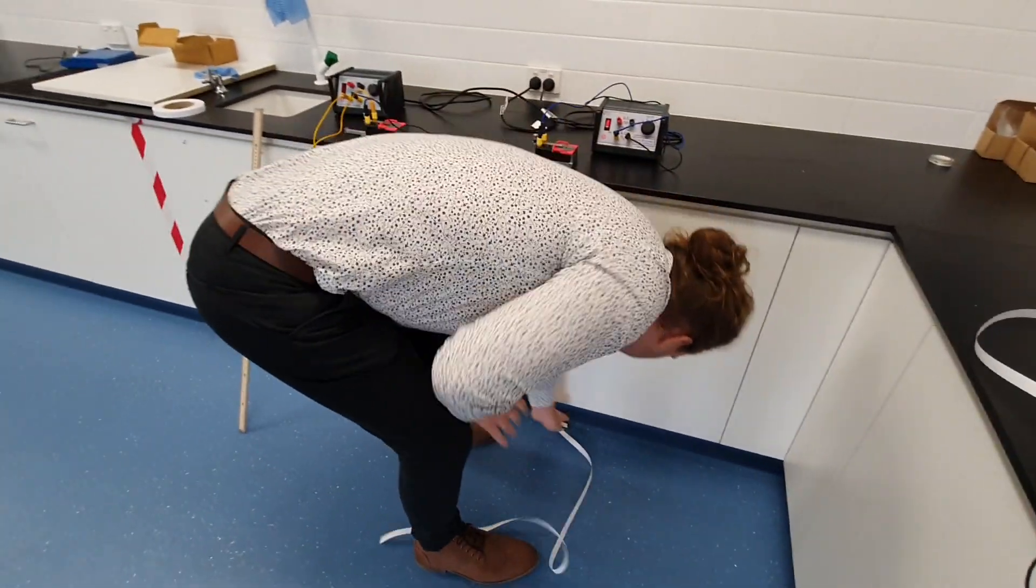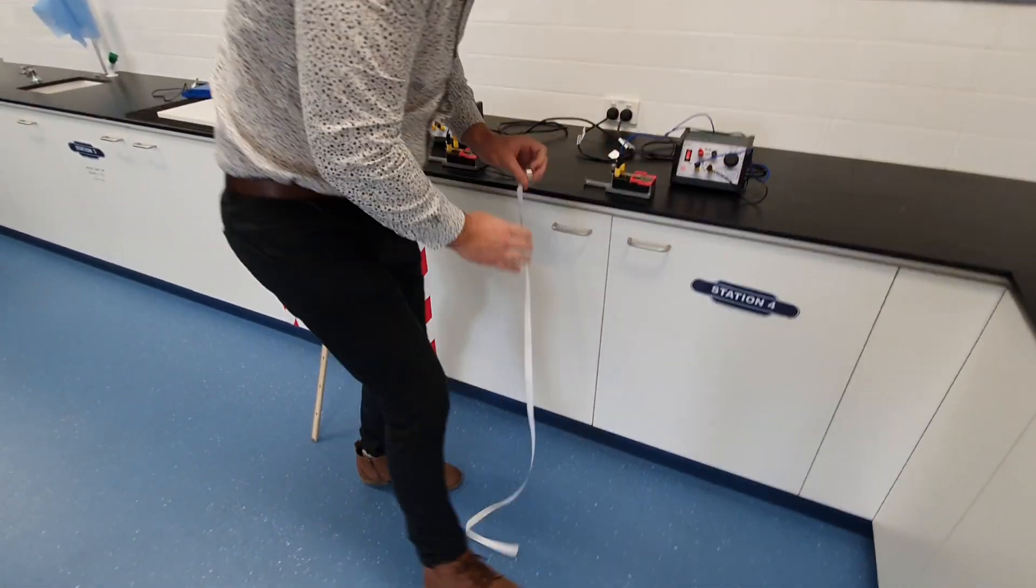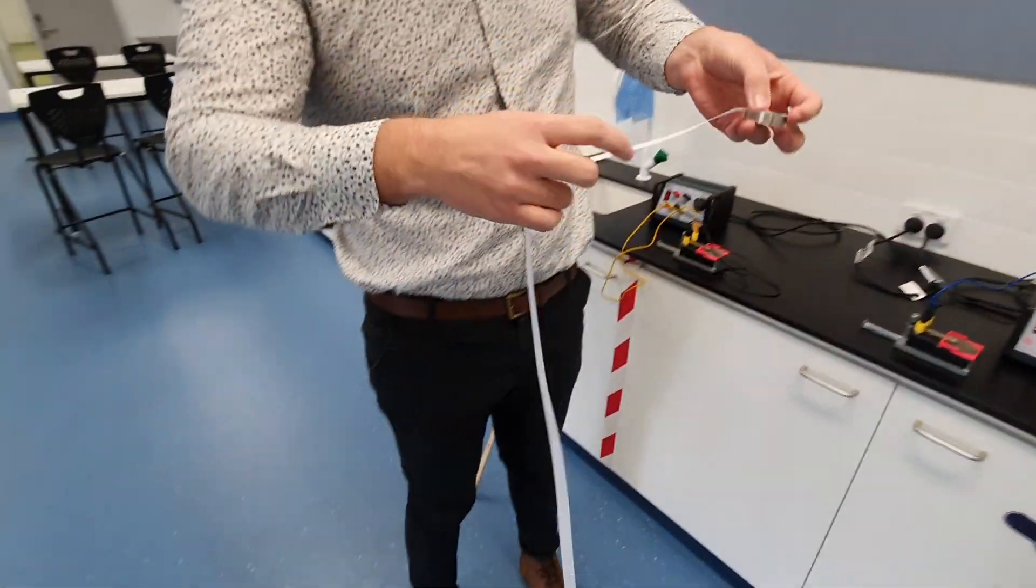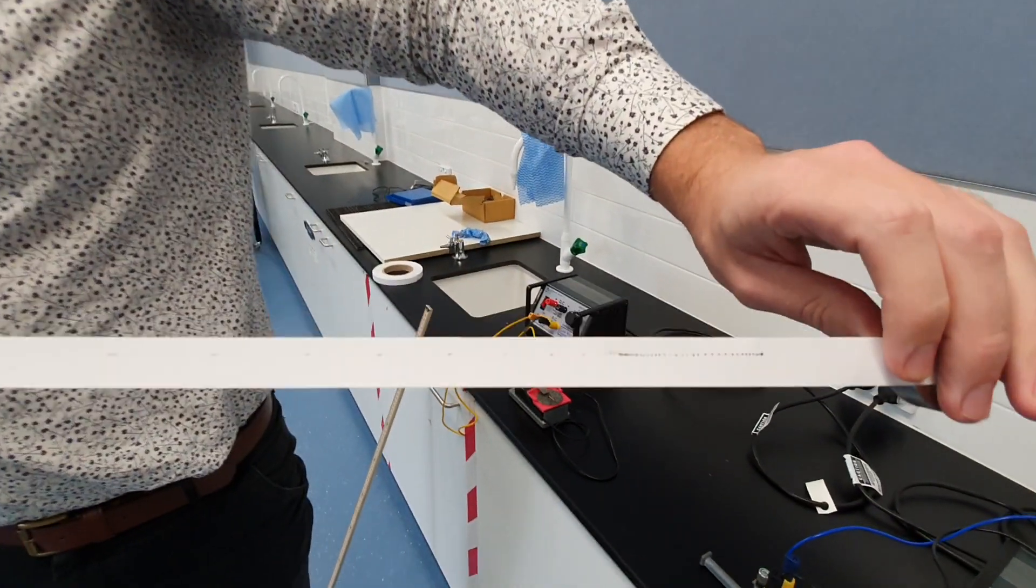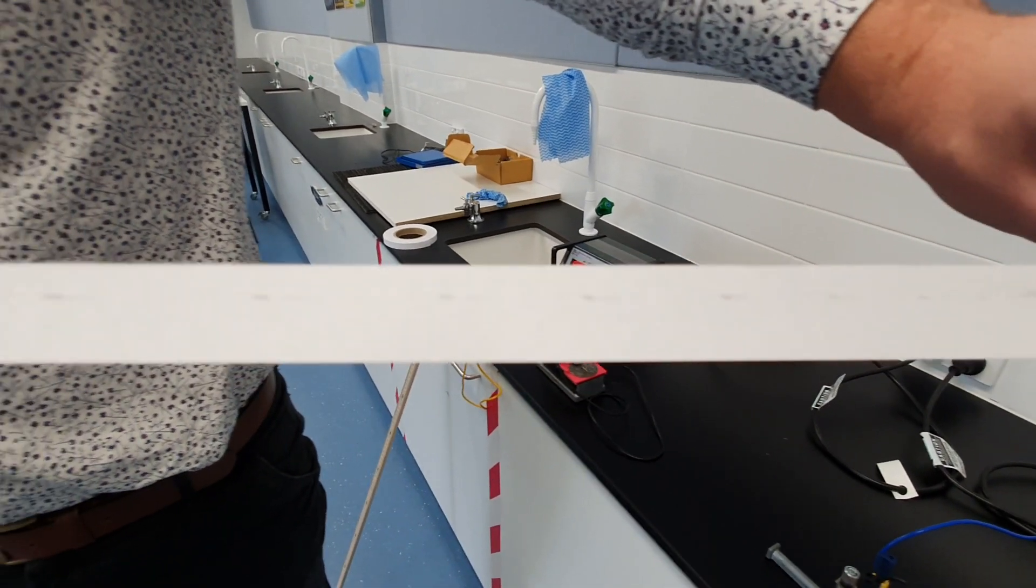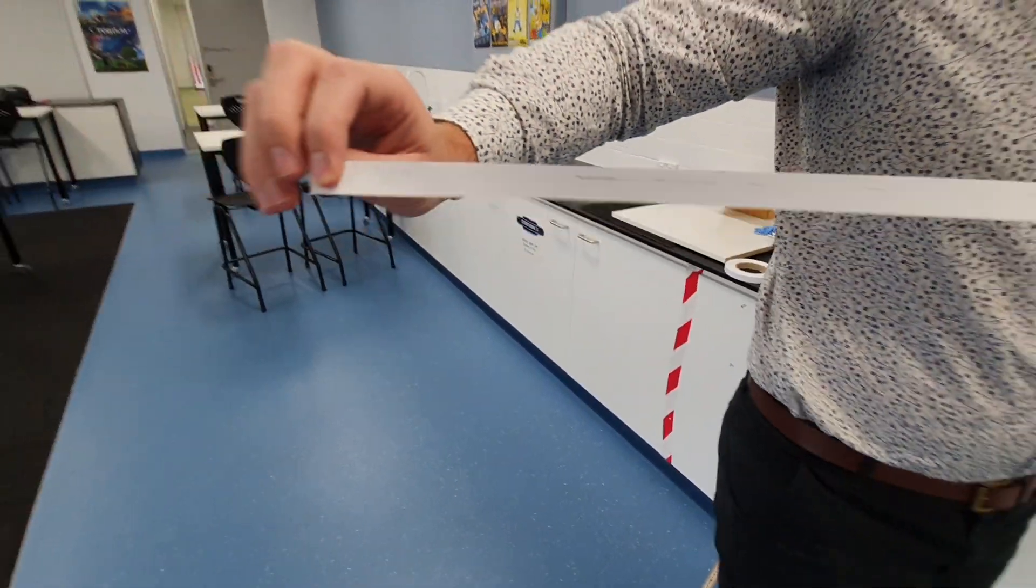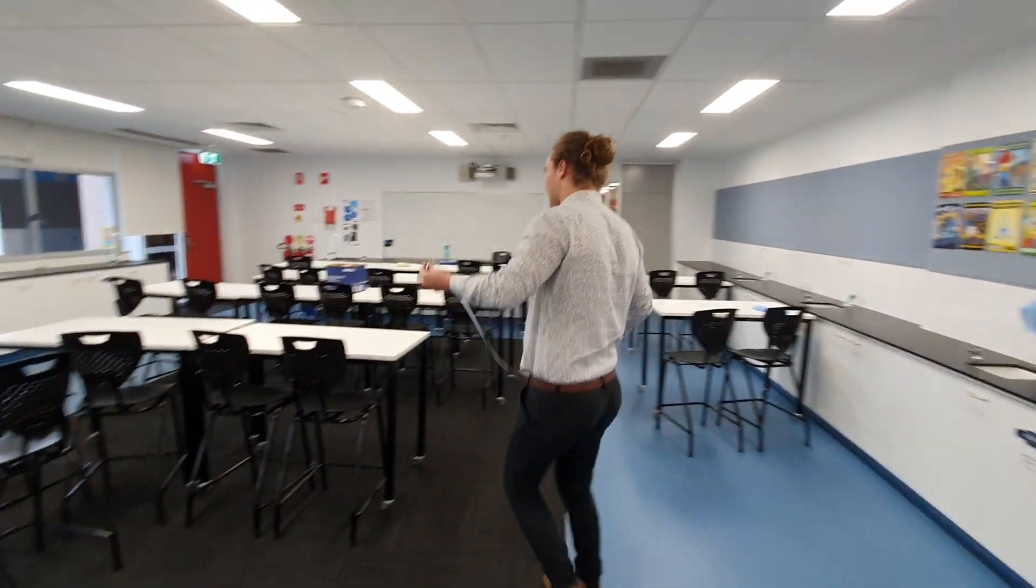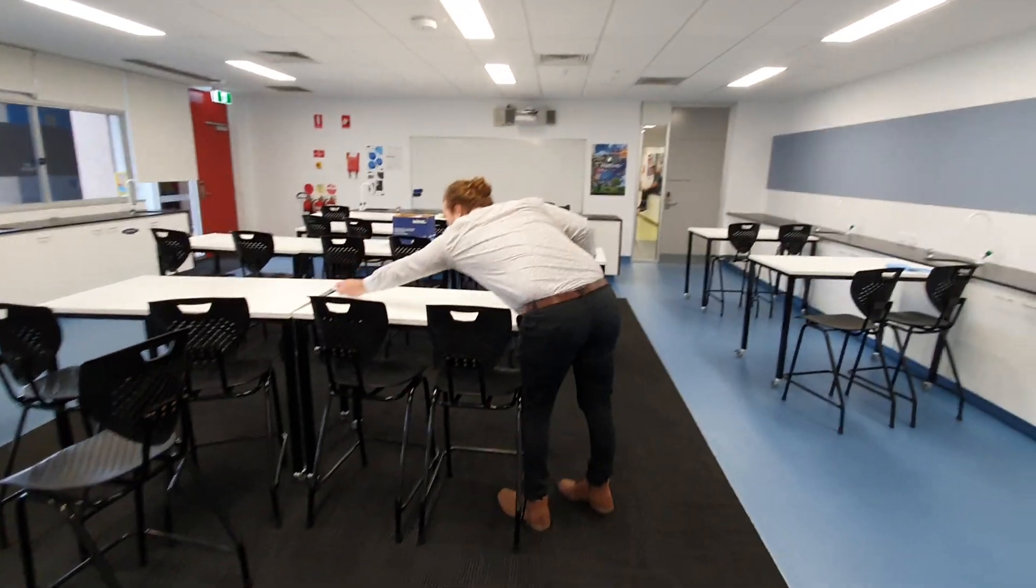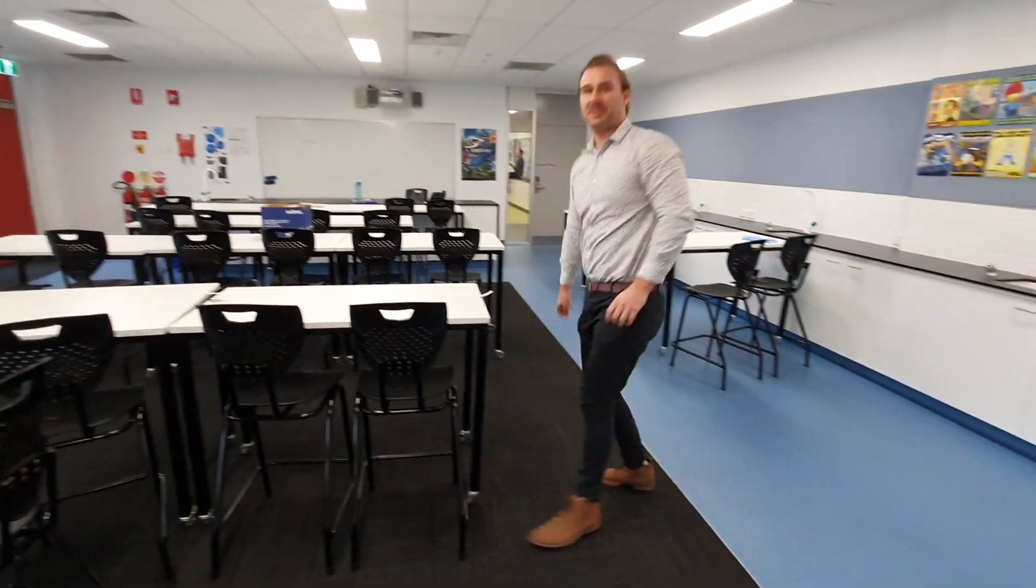And this time hopefully something useful has happened. This time we see our dots again with a little bit different spacing. So this is our second ticker tape. We'll leave it here and leave the mass attached to it so we know which one that is.